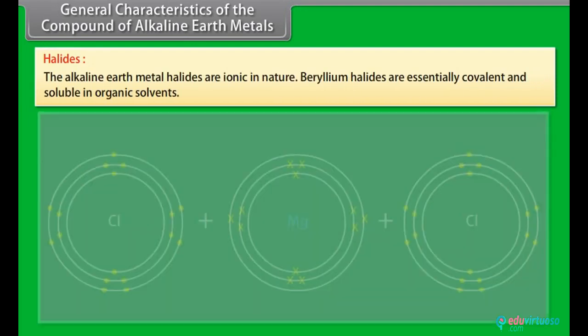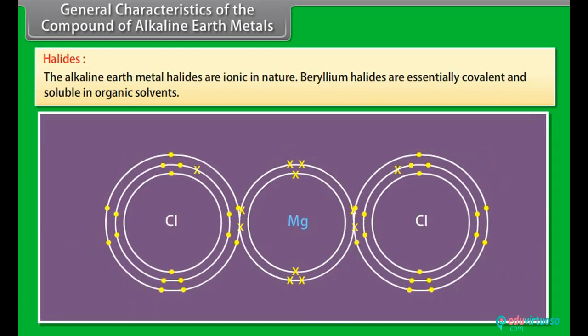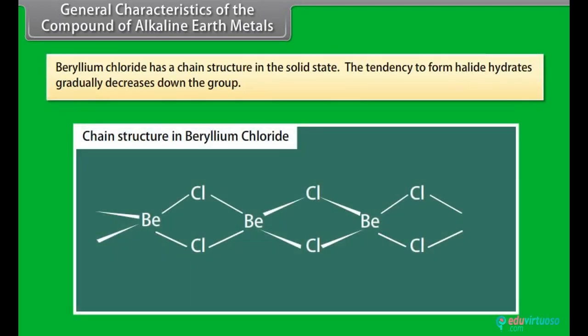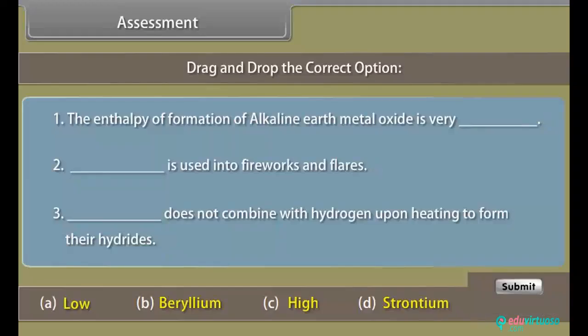Halides: The alkaline earth metal halides are ionic in nature. Beryllium halides are essentially covalent and soluble in organic solvents. Beryllium chloride has a chain structure in the solid state. The tendency to form halide hydrates gradually decreases down the group.